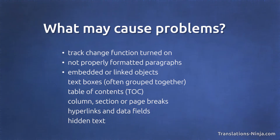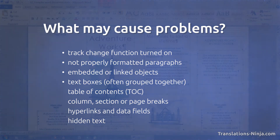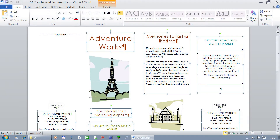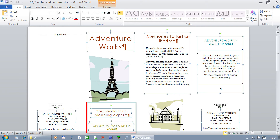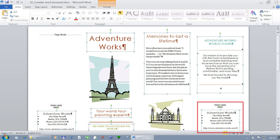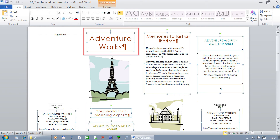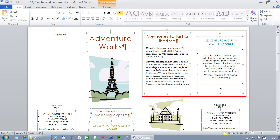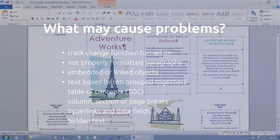Text boxes, often grouped together, can be really problematic because we do not always see the entire text they contain, because we do not always have full access to their content, and because their size and location can change so that the translated version may differ too much from the original document.